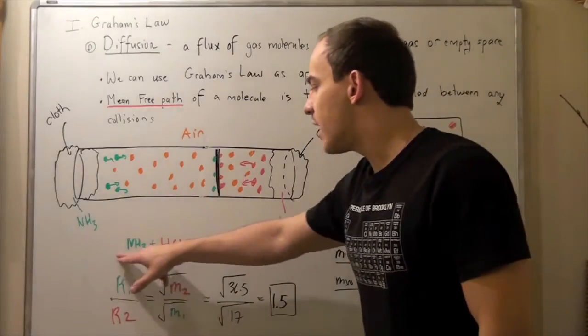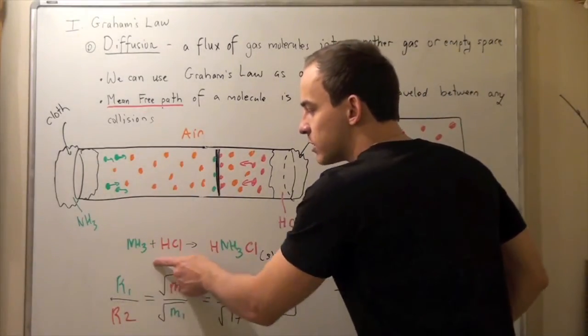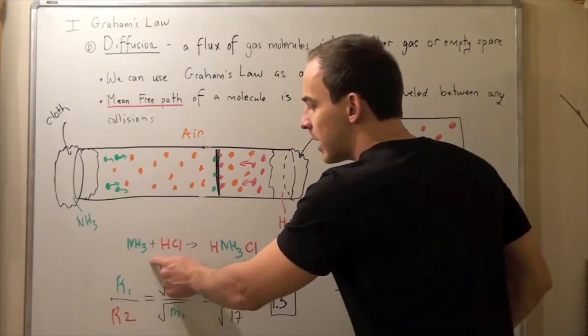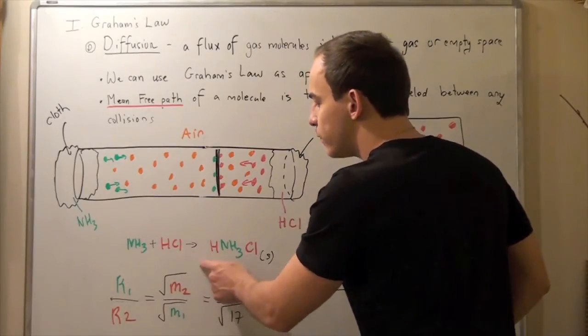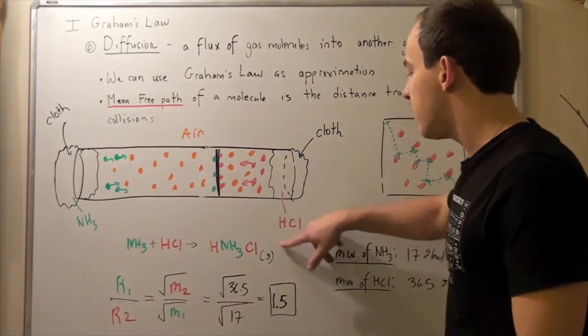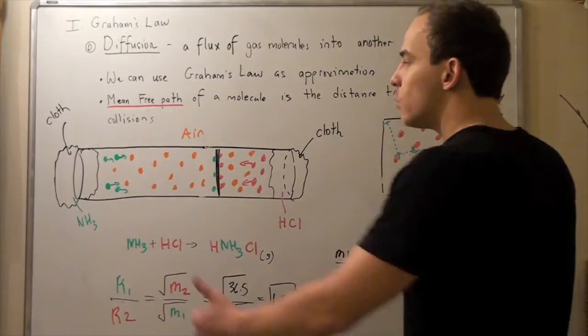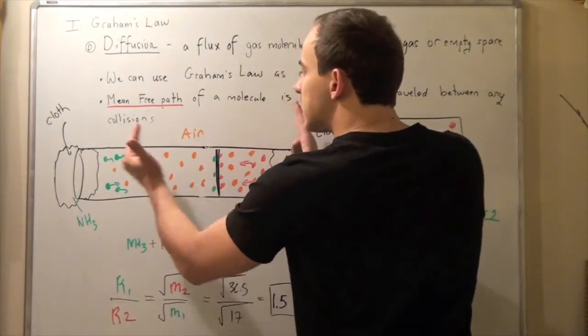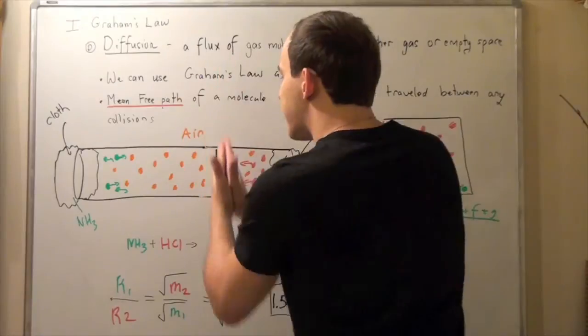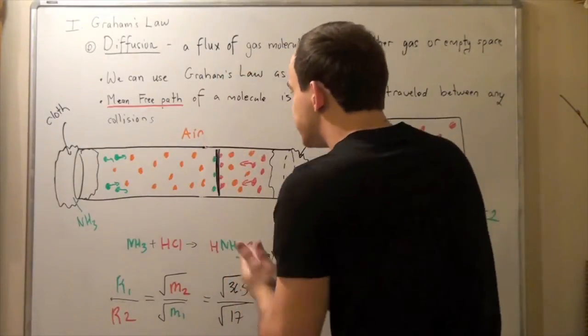The green guy reacts with the red guy, or ammonia reacts with hydrochloric acid in gas state to form a precipitate. It forms a solid. So when these guys meet, at whatever point they will meet, they will form a wall, or a solid wall, the precipitate.